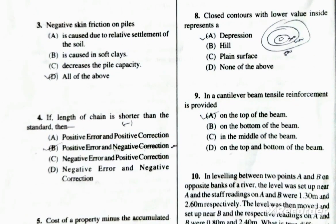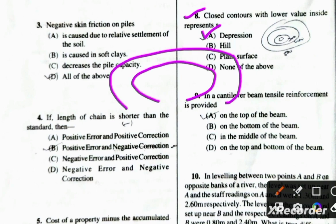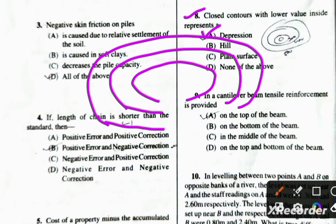Closed contours with a lower value inside represent a depression. This is considered a depression in surveying contour interpretation.